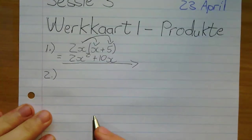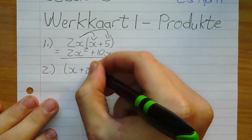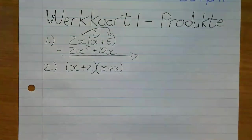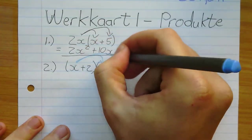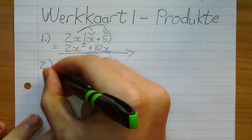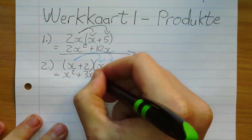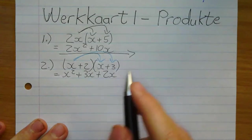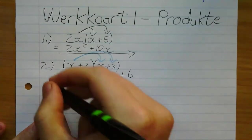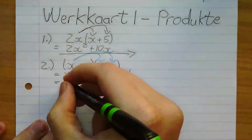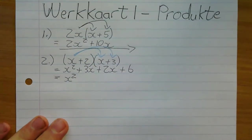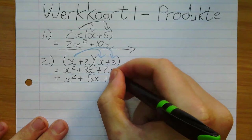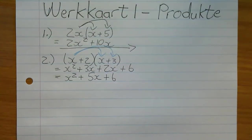Dan die volgende is vraag 2: (x + 2)(x + 3). Ons doen eenmaal - ons maal hier die x met elke term in die tweede haakies. x maal x is x kwadraat, x maal 3 is 3x. Dan die volgende: 2 maal x is 2x, en 2 maal 3 is 6. Gelyksoortige terme: daar is nie nog 'n x kwadraat nie, so dit is net een x kwadraat. Ons kyk: 3x en 2x is gelyksoortige terme, so ons kan dit met mekaar tel. Dan kry ons x kwadraat plus 5x plus 6.